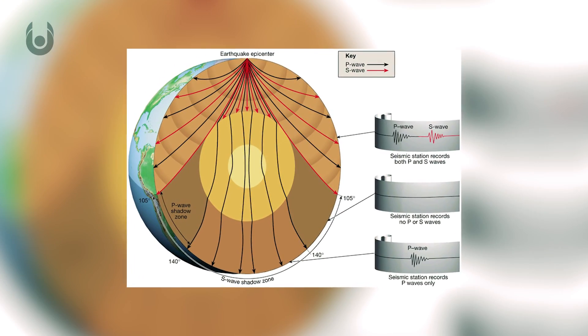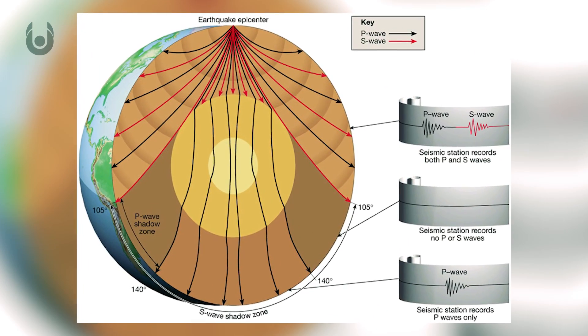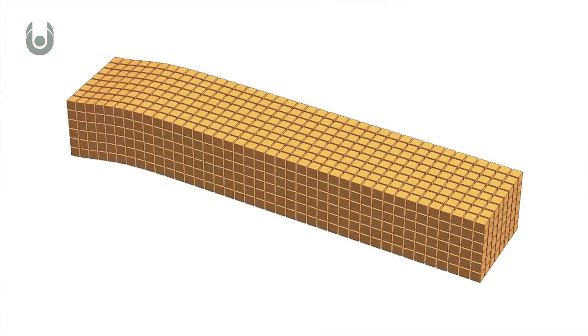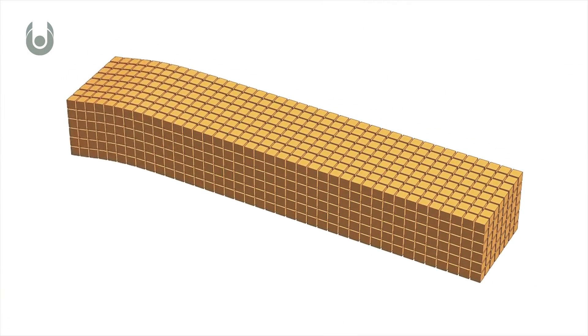The outer core was determined to be liquid from observations showing that compressional waves pass through it, but elastic shear waves do not, or very weakly. Shear waves are given this name because they move through the body of an object, unlike surface waves.